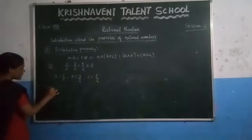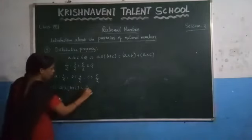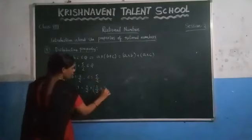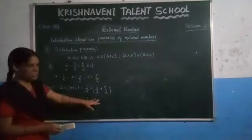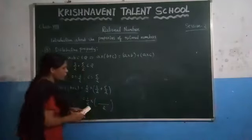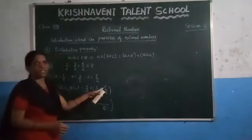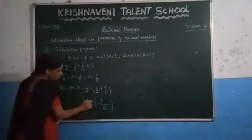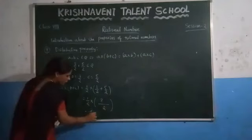Now check the LHS. What is the LHS? You have to solve a into (b plus c). The value of A is 1 by 2, B is 3 by 2, and C is 5 by 2. How do you solve? First solve what is inside the brackets. Take the LCM of 2 and 2, which is 2. Since the denominator is the same, you can directly add the numerators: 3 plus 5 equals 8. Now multiply: 1 into 8 is 8, and 2 into 2 is 4. The value of 8 by 4 is 2.